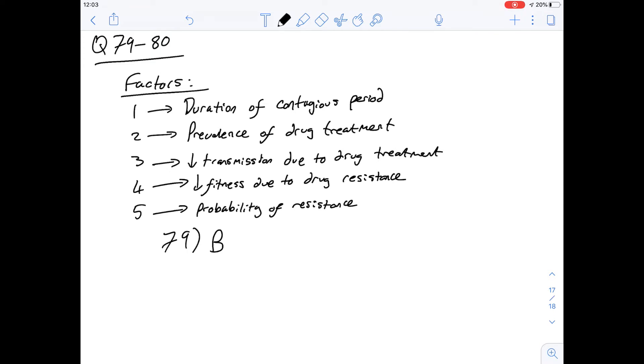Okay, so we talked about factors one and four already, but the other one that's mentioned in the question, or in these answers that are given, is factor five, and that's the probability that a drug sensitive microorganism becomes resistant when treated. And we're told that genital herpes has a low probability that treatment will lead to resistance.